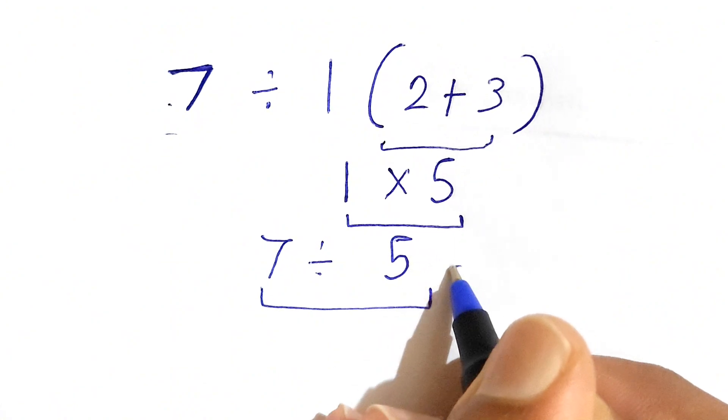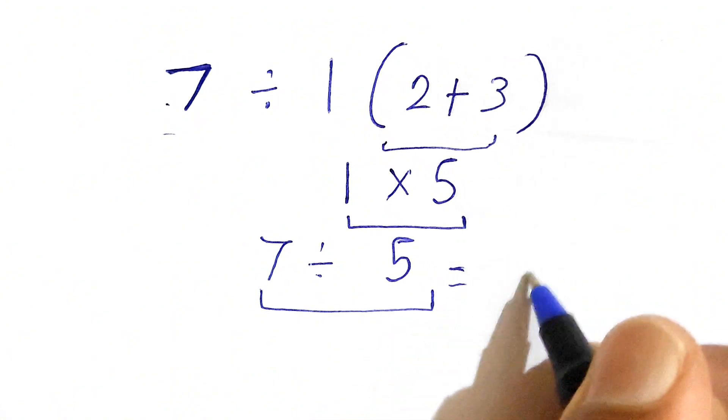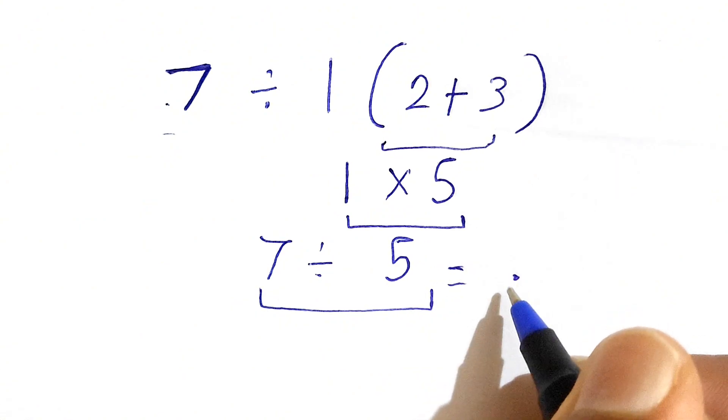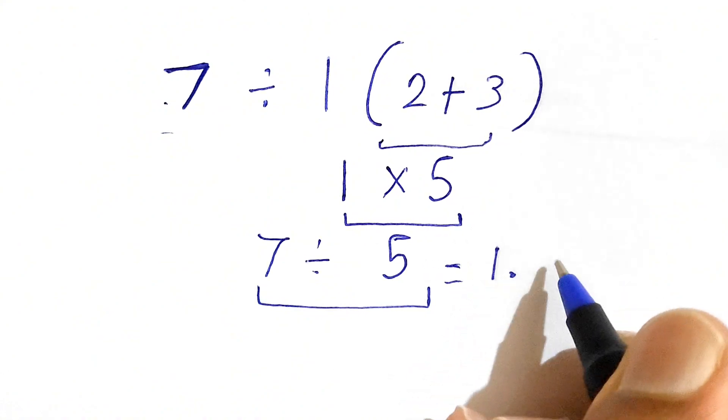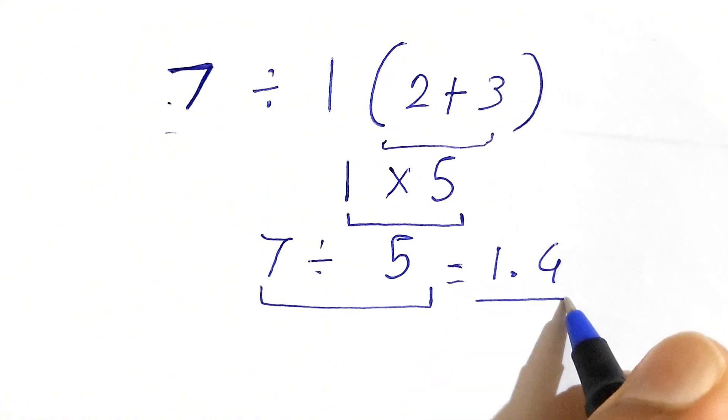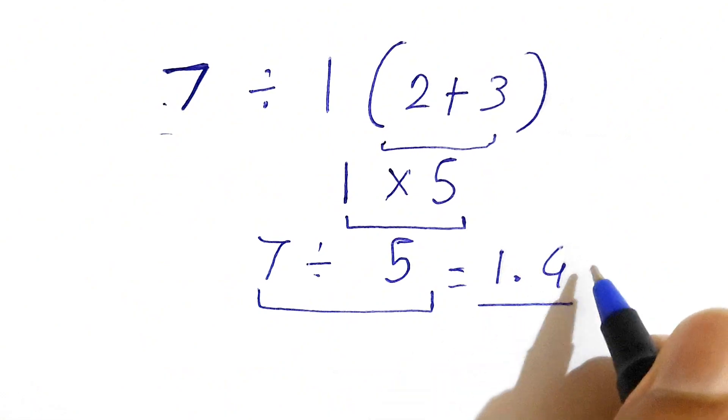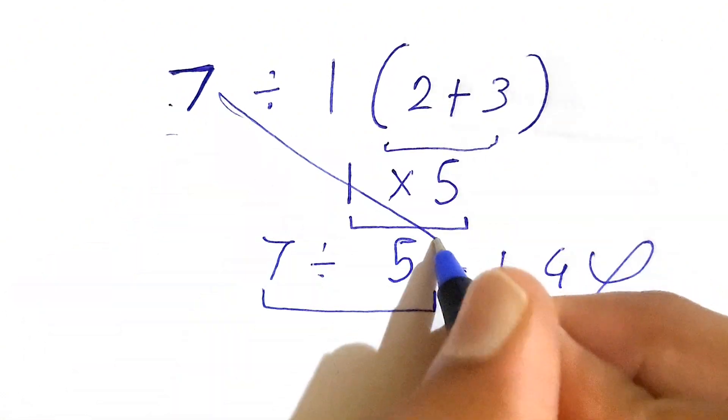7 divided by 5 gives us the answer something like 1.4. So if you think this is the correct answer, you are wrong because it's incorrect and this method is totally wrong.